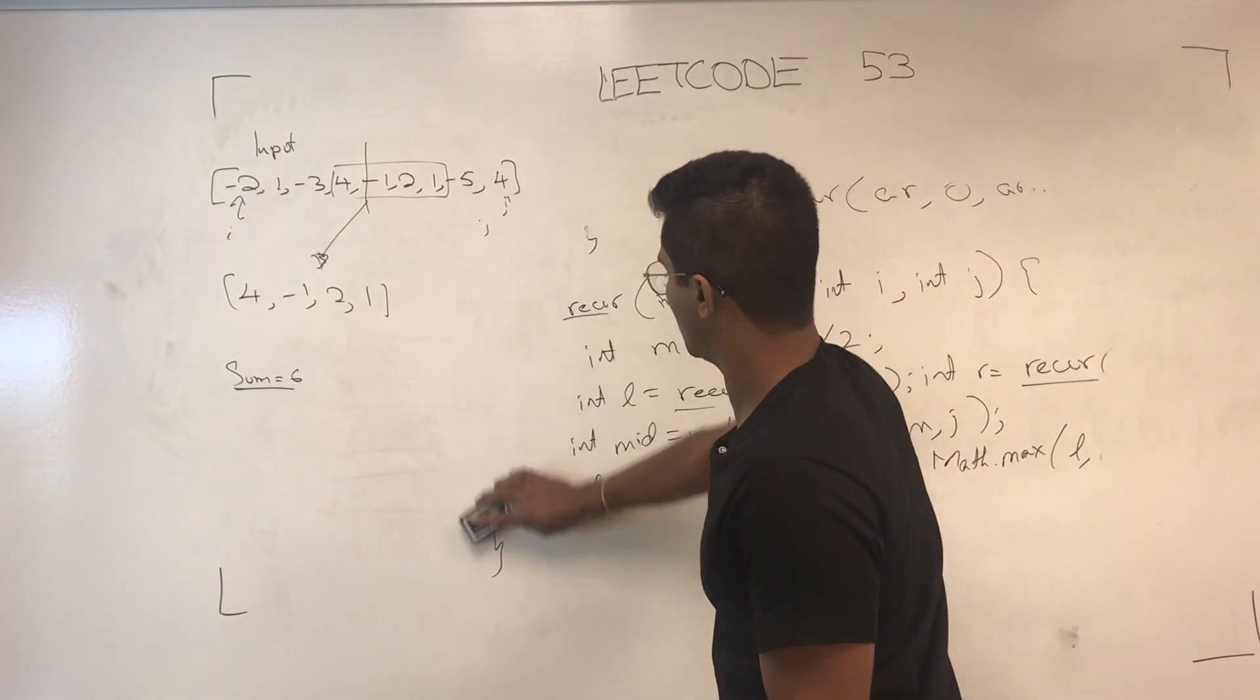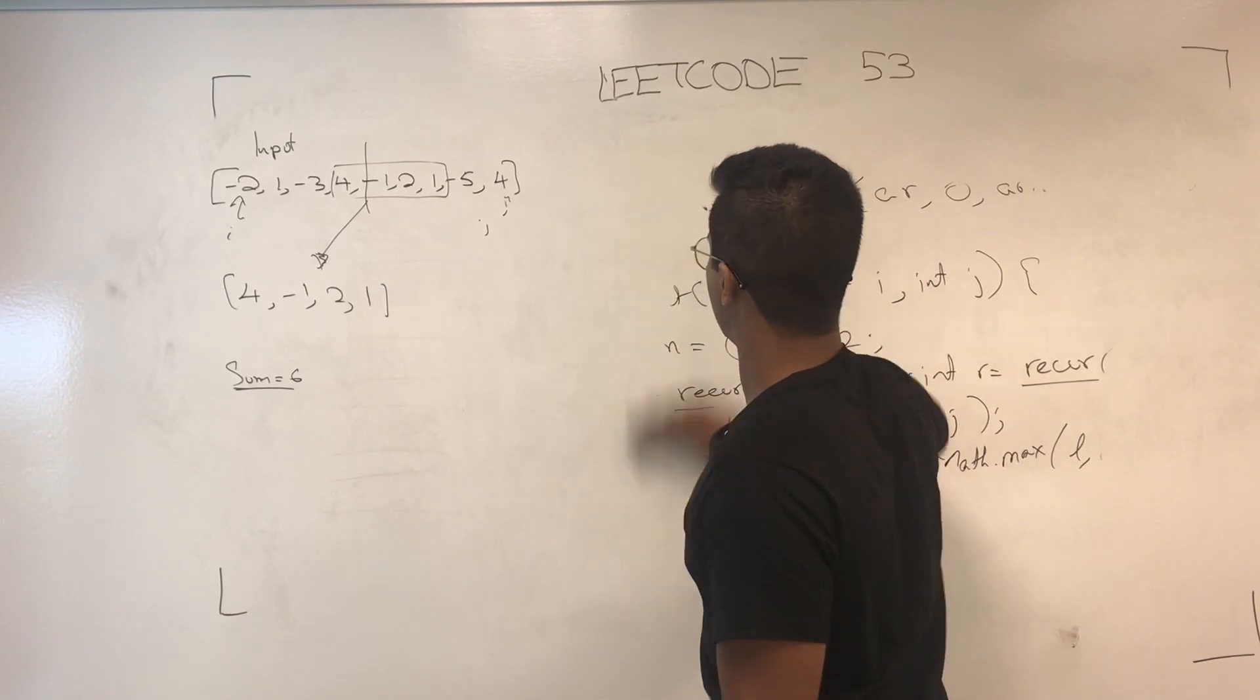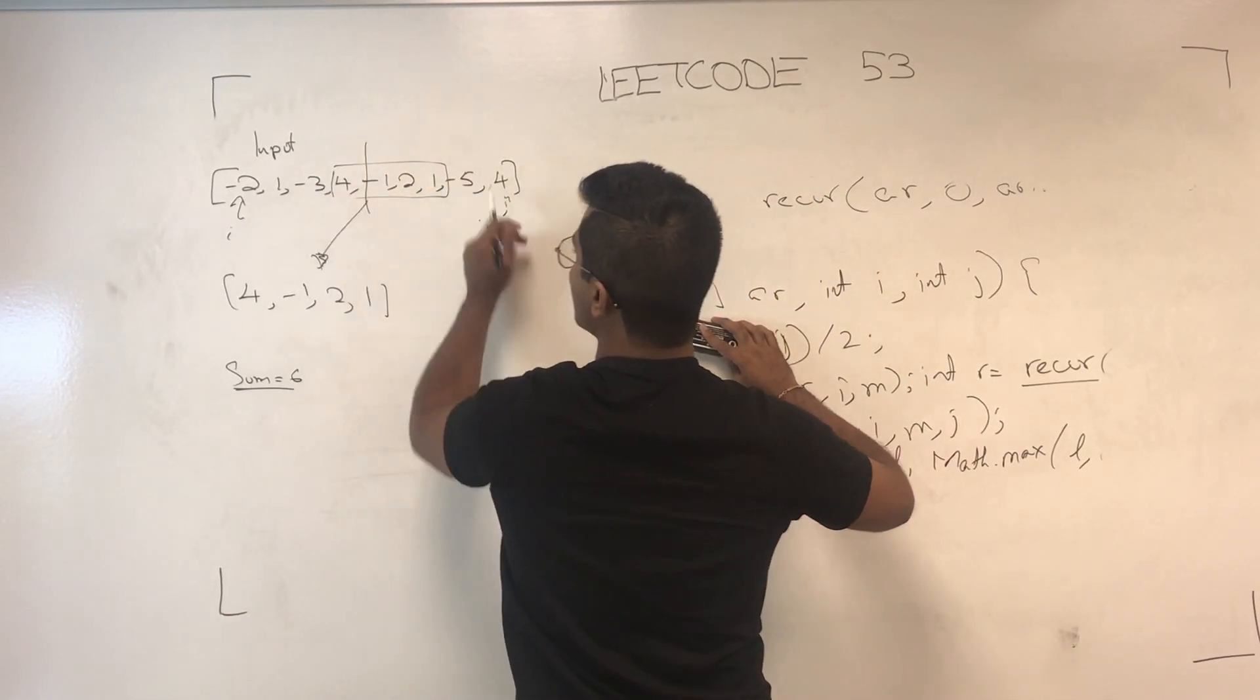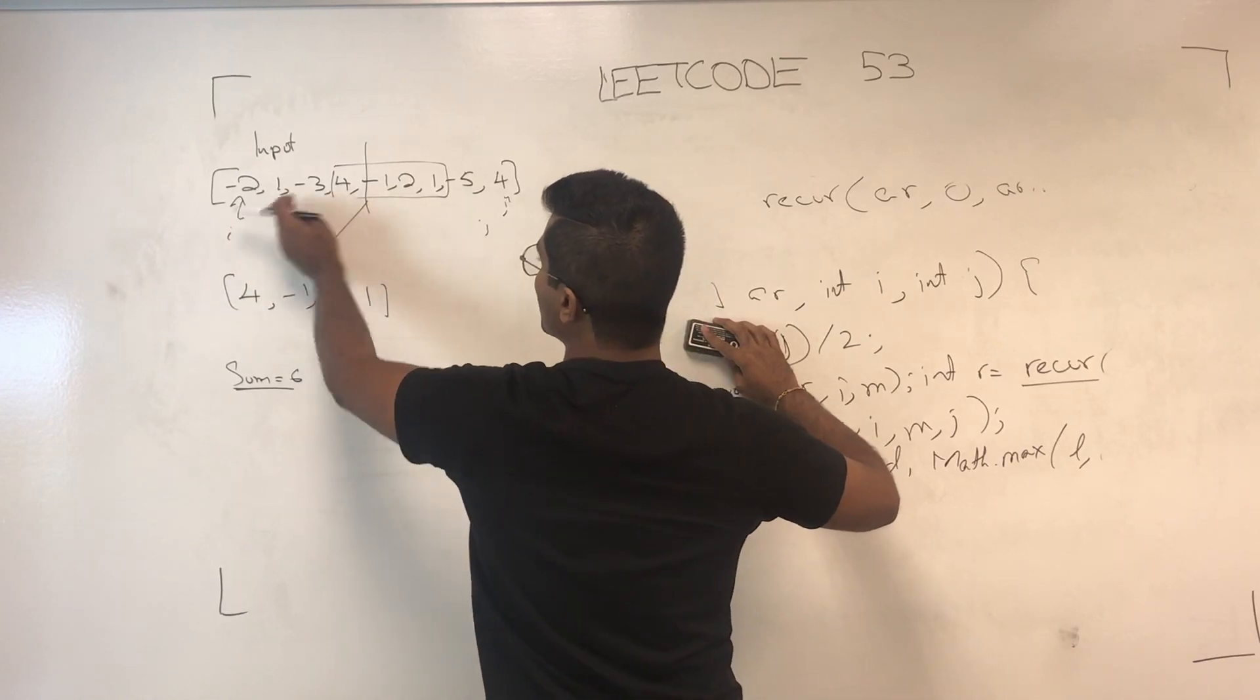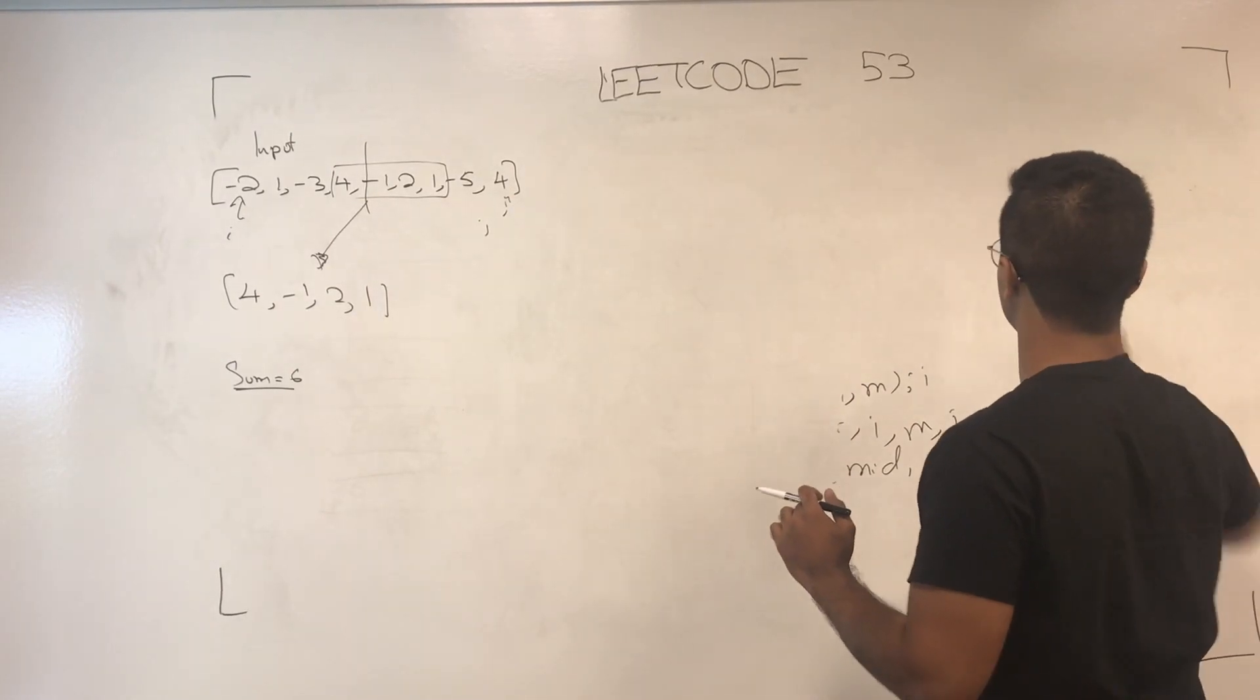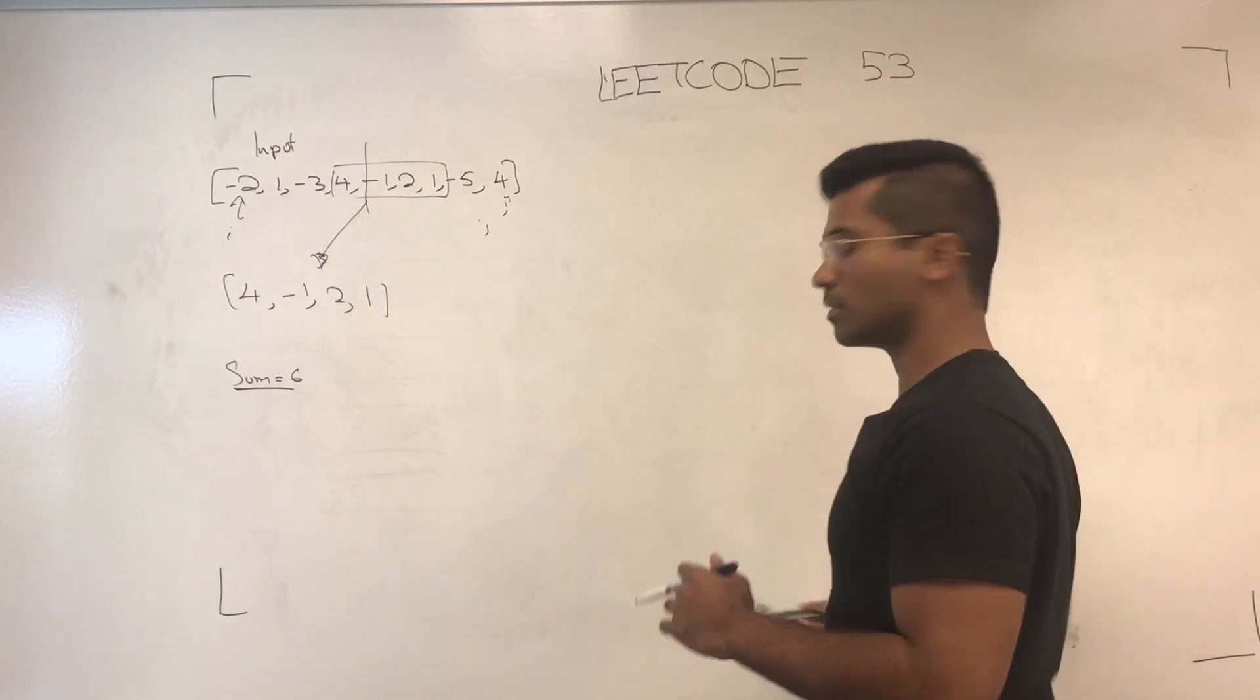So, the way that the middle works is essentially starting from this center, and going this way, and also this way, to see if it's better to include how much of this left subarray. Is it beneficial to include if we want to maximize the sum.